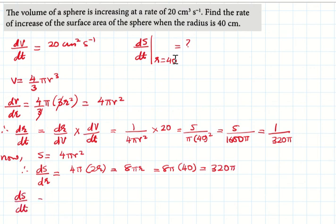dS/dt equals dS/dr times dr/dt. Applying the chain rule, you can see that the dr's cancel. Now we know both these values, so just substitute that.